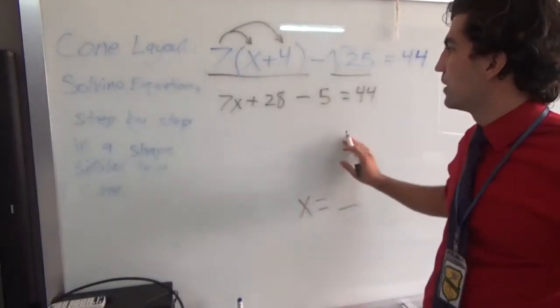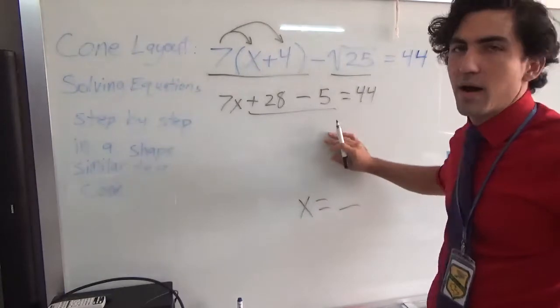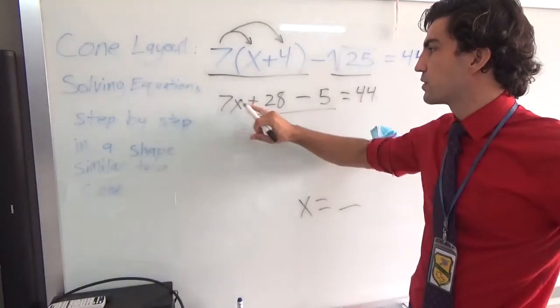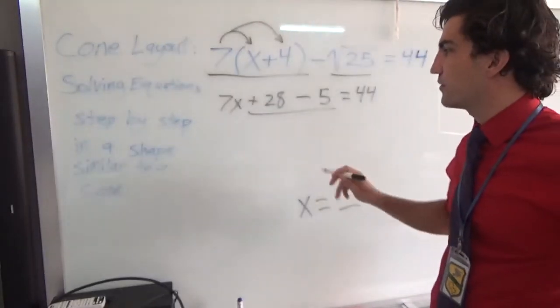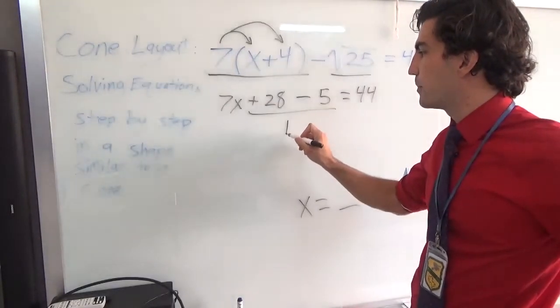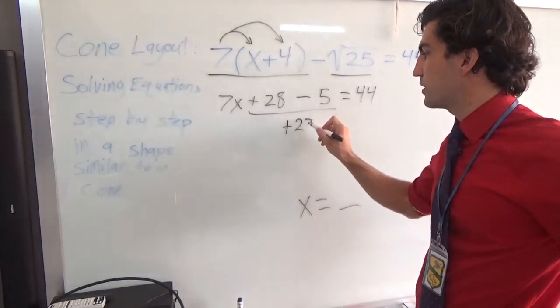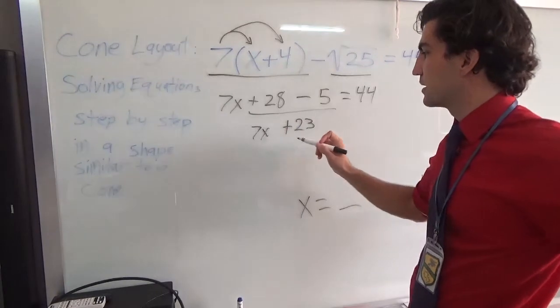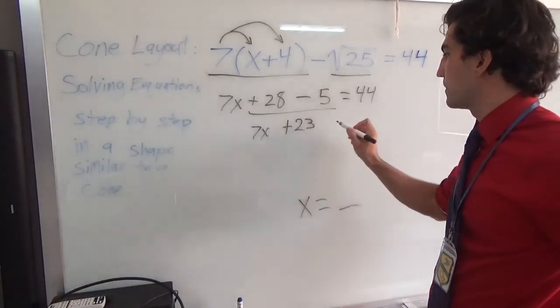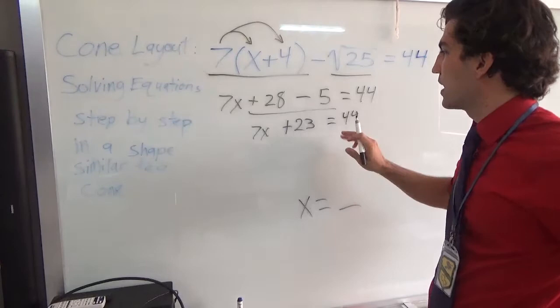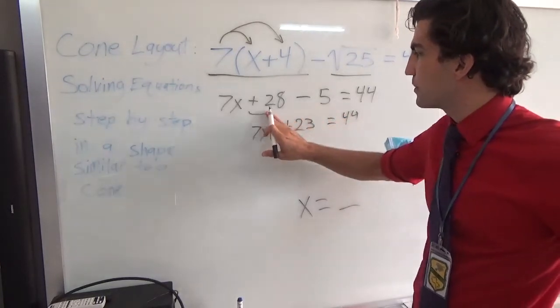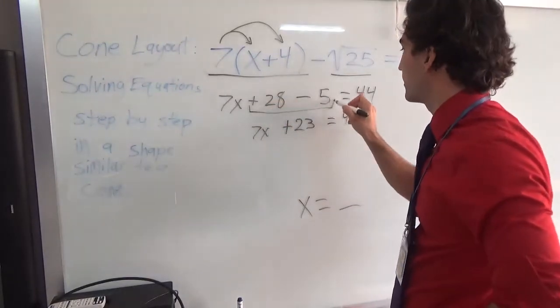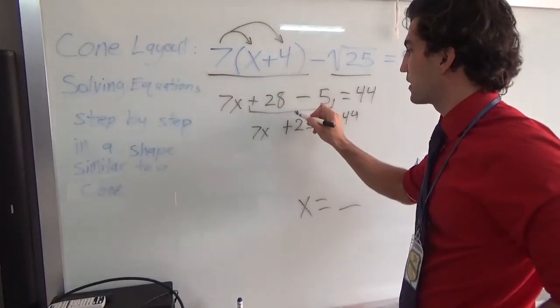Now, we can combine the positive 28 and the minus 5. If we have 28 minus 5, we will be left with a positive 23. So once again, we will have this 7x plus 23 equals 44. And you know what? I'm actually going to make it a little bit more detailed. I'm going to show that I have combined these to make that.